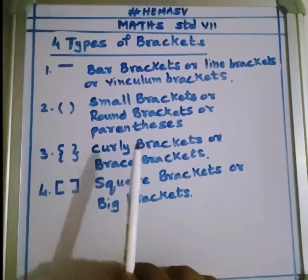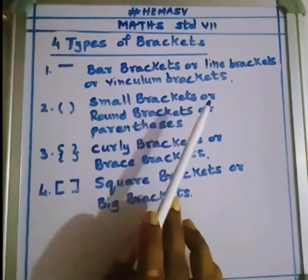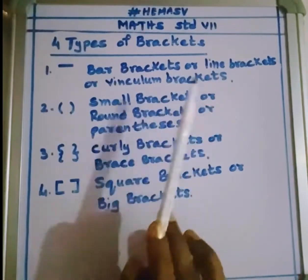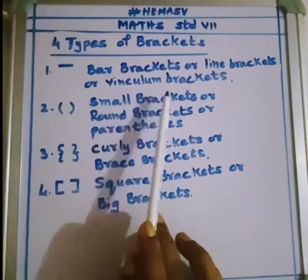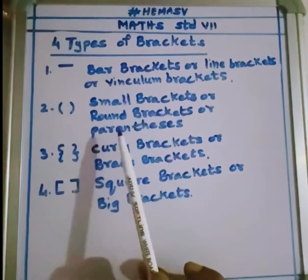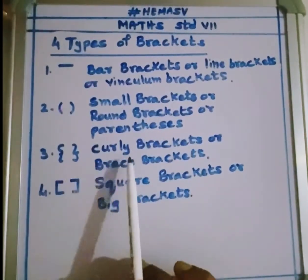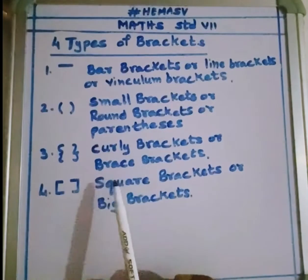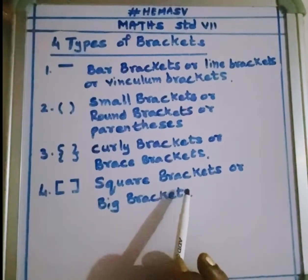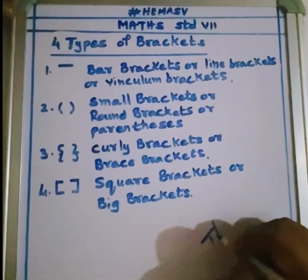Very fast, we will revise. How many types of brackets are there? There are four types of brackets. First one: bar brackets or line brackets or vinculum brackets. Second one: small brackets or round brackets or parenthesis. Third one: curly brackets or brace brackets. Fourth one: square brackets or big brackets. Thank you.